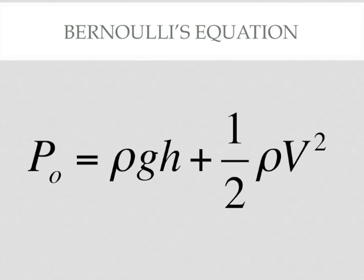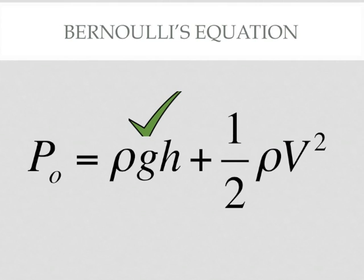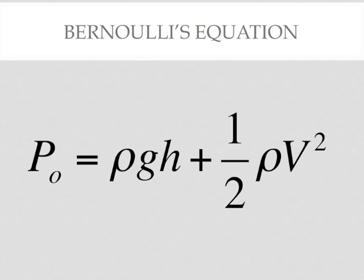We can divide the equation into three parts: the total, or stagnation pressure; the static, or ambient pressure; and the final term, dynamic pressure, where V represents the speed of the oncoming airflow.